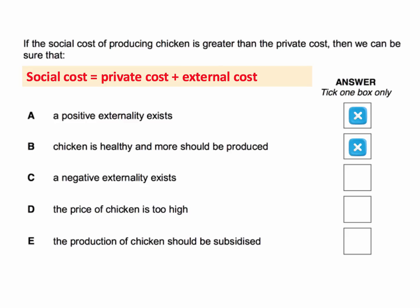Option C: a negative externality exists. Yeah, that's right. If there's a negative externality, the social cost is greater than the private cost. So C is right, and that's clearly the correct answer.